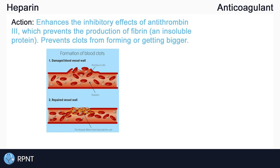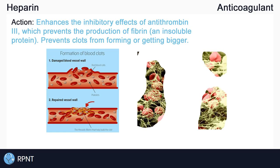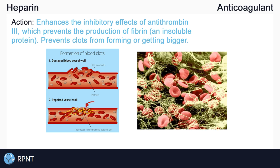Fibrin forms long threads that help to trap platelets and blood cells and form blood clots in a mesh-like structure. So all in all, heparin prevents the production of fibrin, which helps to prevent clots from forming or from getting bigger if they already exist.